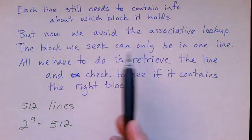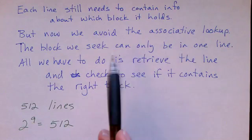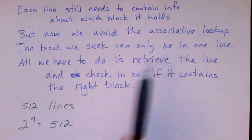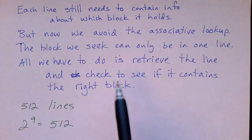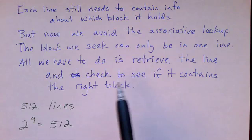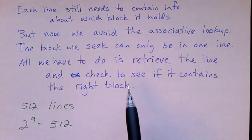If we are looking for a particular block, it can only be in one possible line, so there's only one place to look for it. All we have to do to retrieve a particular block is retrieve the line that it has to be stored in and then check to see whether that line really did contain the right block.